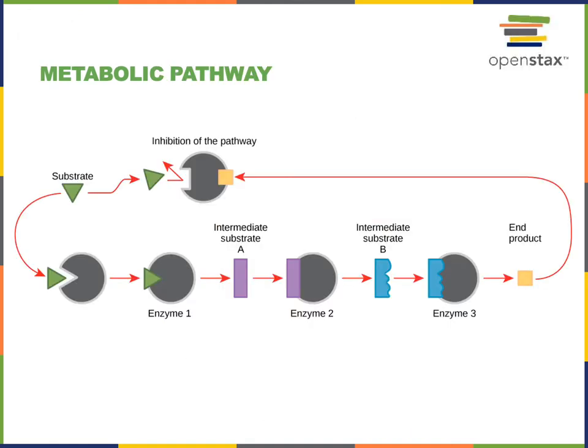A metabolic pathway is a series of biochemical reactions that convert a substrate molecule, or multiple substrate molecules, through a step-by-step process where the substrates are converted to intermediate substrates and then eventually to the final product or products. Each chemical reaction in a metabolic pathway is catalyzed by a specific enzyme.